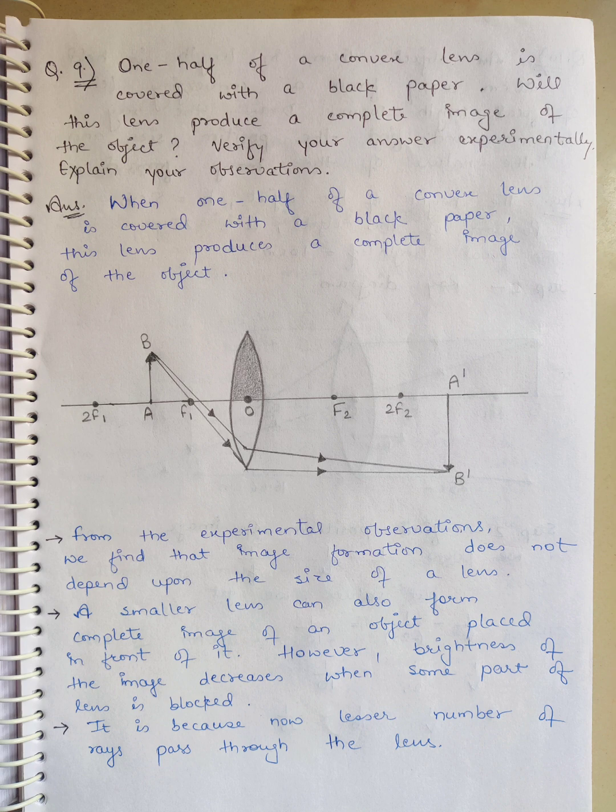When one half of a convex lens is covered with black paper, this lens produces a complete image of the object. We will get a complete image of the object. You have to show this diagram experimentally. On the left side, the object is A, B. This is half covered with black paper. On the right side, the image is A dash, B dash.